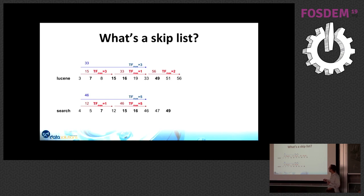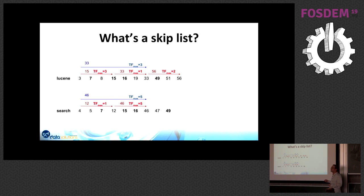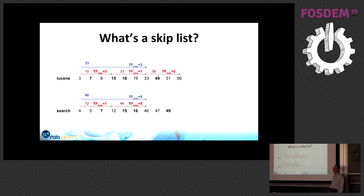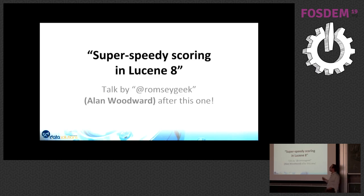Because we cannot store actual scores in the posting list, we instead store statistics: all documents in a block have a maximum term frequency of 3. Since higher term frequency leads to higher score, and norms work inversely, for an OR query you can ask for the next document where the minimum score is at least 20 to enter the top results. You calculate from the skip list the best position to move to. Of course, you can no longer count exact hit counts, since you've jumped over unknown documents.